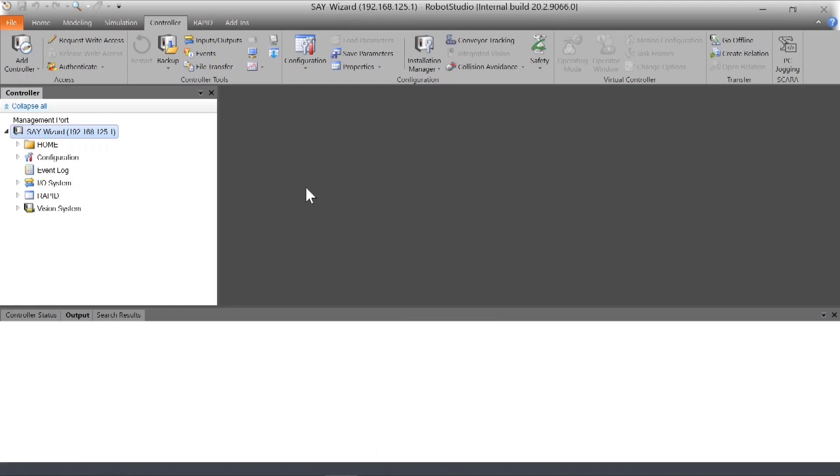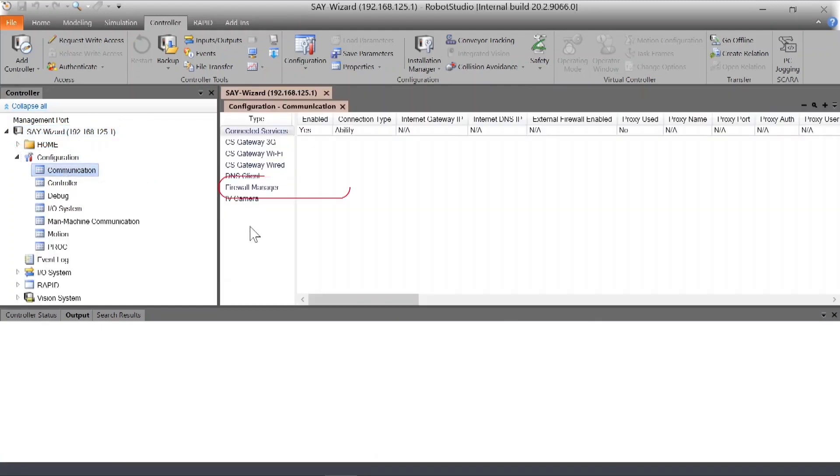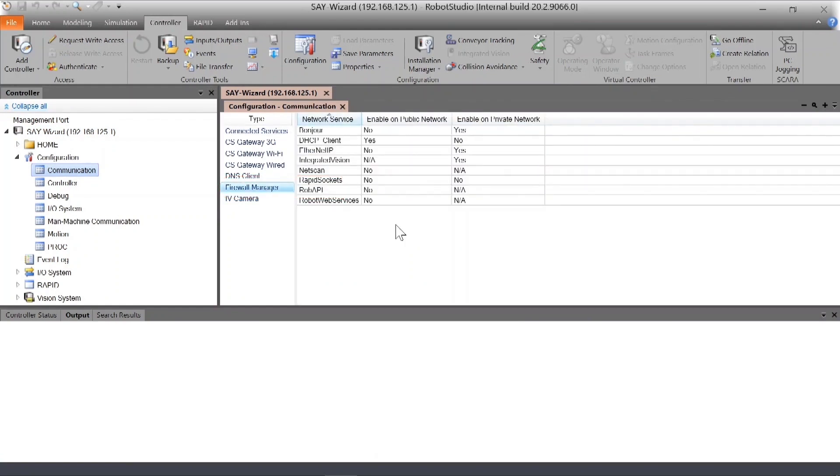On a PC, launch Robot Studio. Connect the robot over the management port. Open up the configuration settings and the communication tab. Select the firewall manager. Here you can see that most of the network services available on the robot has been disallowed on the public network.